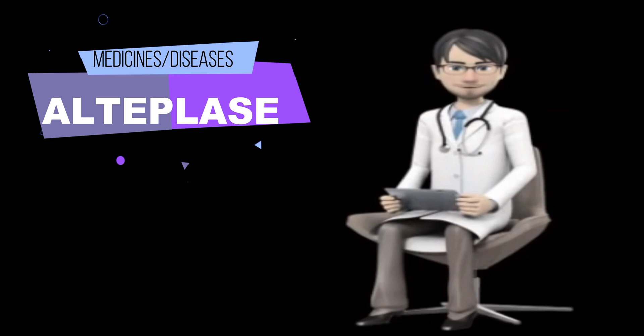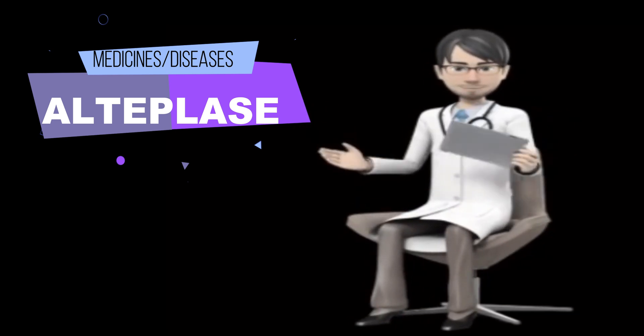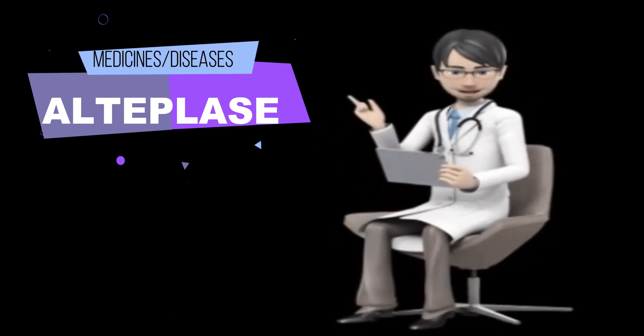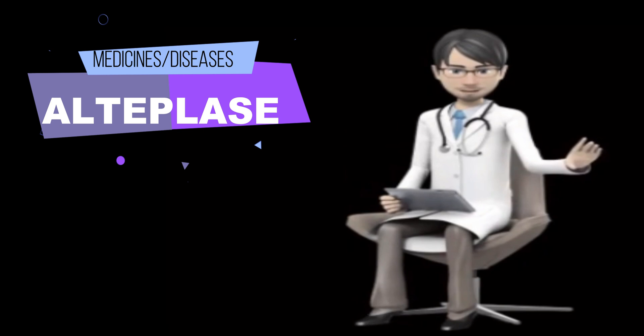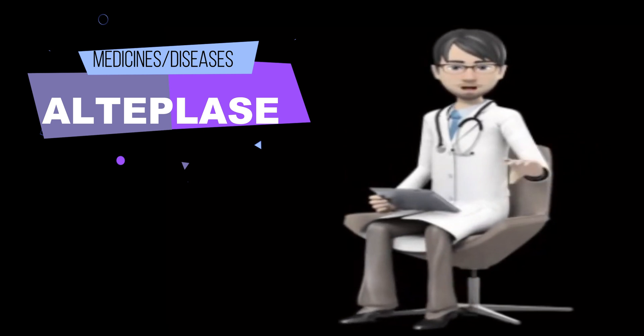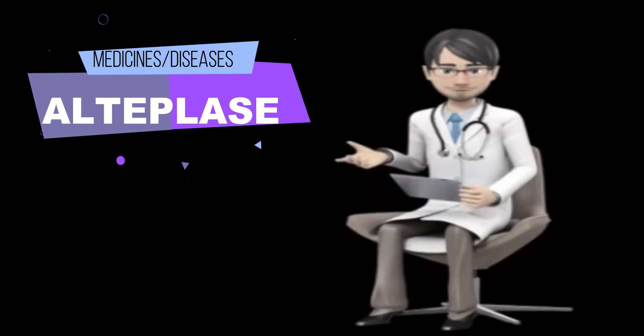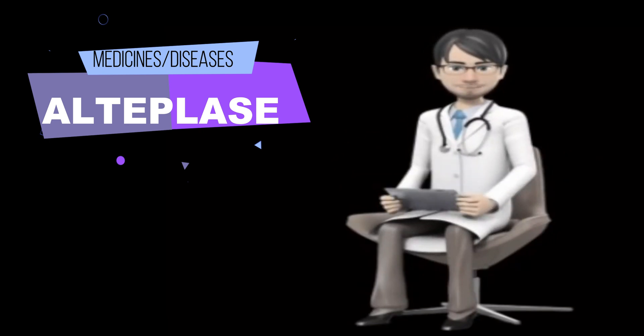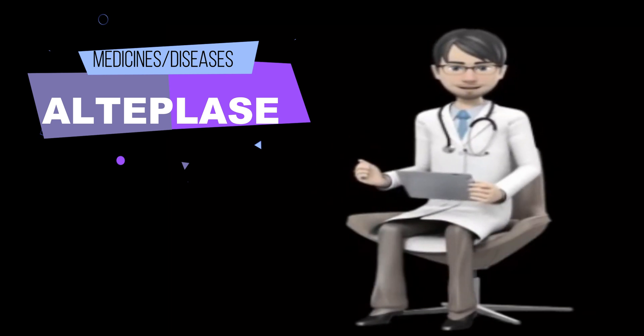If possible before you receive Alteplase, tell your doctor if you have ever had any type of stroke, bleeding in your brain, stomach, intestines, or urinary tract, high blood pressure, heart problems, an infection of the lining of your heart also called bacterial endocarditis, a serious injury or major surgery, or severe bruising or infection around a vein where an IV was placed.